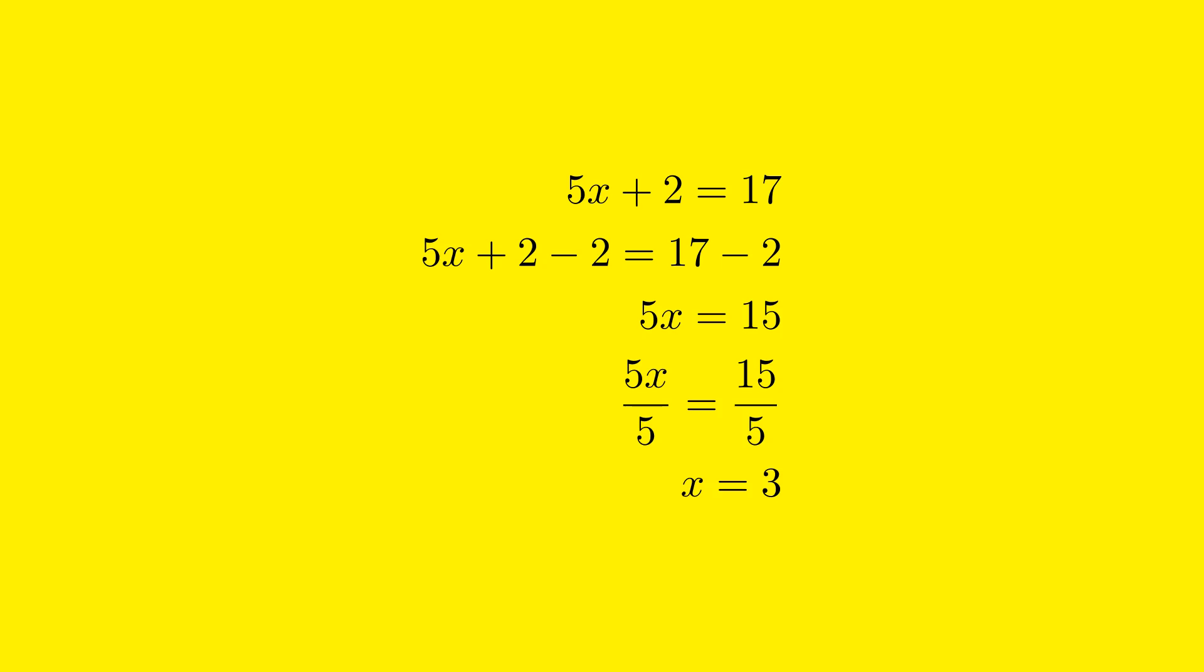When we divide 5x by 5, we are left with x because 5 divided by 5 equals 1. On the right side, we need to divide 15 by 5. 15 divided by 5 equals 3. Therefore, after dividing both sides of the equation by 5, we have x equals 3. This means the variable x has been successfully isolated and we have solved the equation.